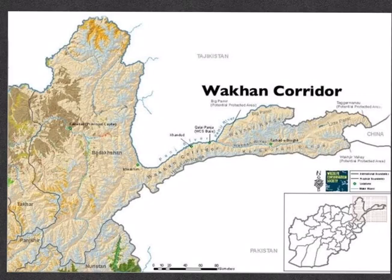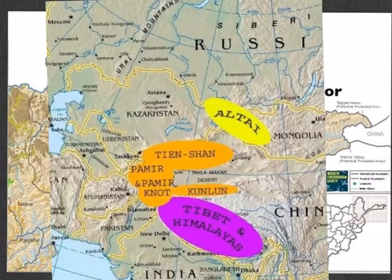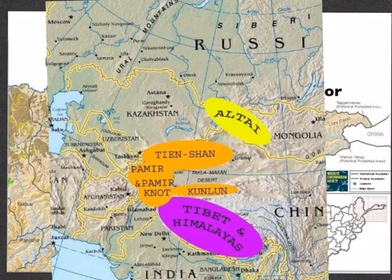Why is the Wakhan Corridor and Durand Line so significant for any country — India, Pakistan or even Afghanistan? The region is significant for both its geographical and geopolitical reasons. Geographically, it is surrounded by pristine mountains on all sides. Various mountain ranges surrounding this region include Tianshan, Karakoram, Kunlun, Hindukush, Suleiman and Pamir Mountains. The Pamir Knot is called the roof of the world because of its high altitude.